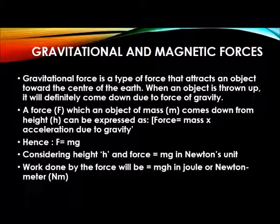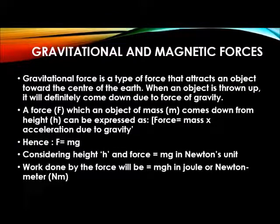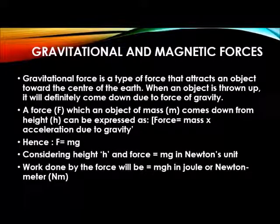Considering h to be height and force to be mg (measured in newton units), the work done by the force will be m × g × h. That's why we have mgh, with units of joules or newton meter. Work done is the product of force and distance moved. Since force is mg and distance is h, work done equals mgh. Energy and work done are both measured in joules.